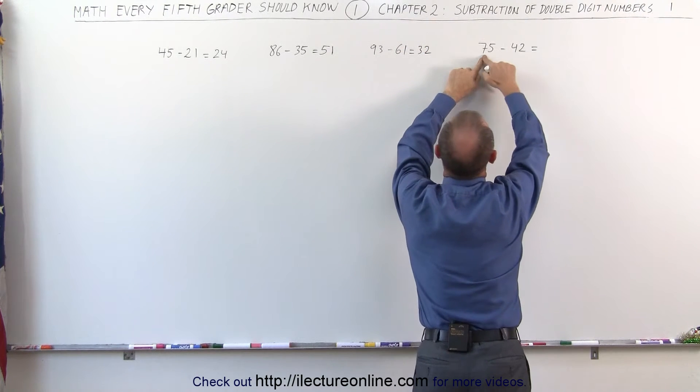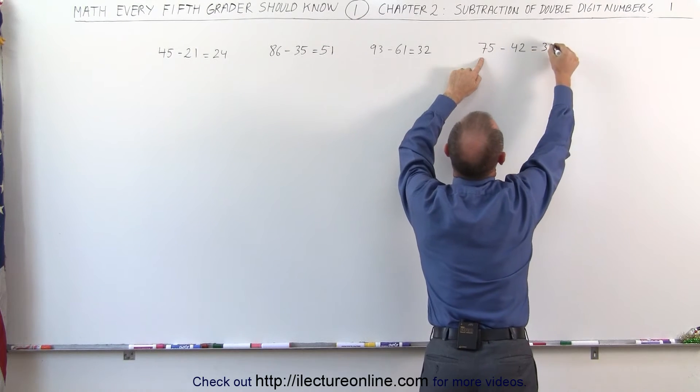Here we subtract 4 from 7, that gives us 3. 2 from 5, that gives us 3.